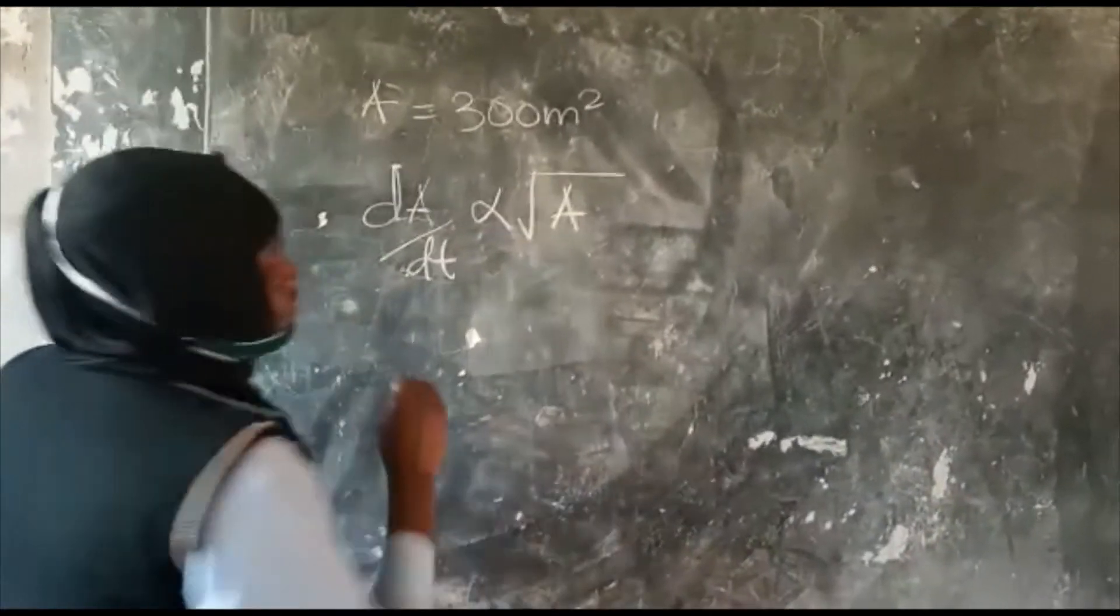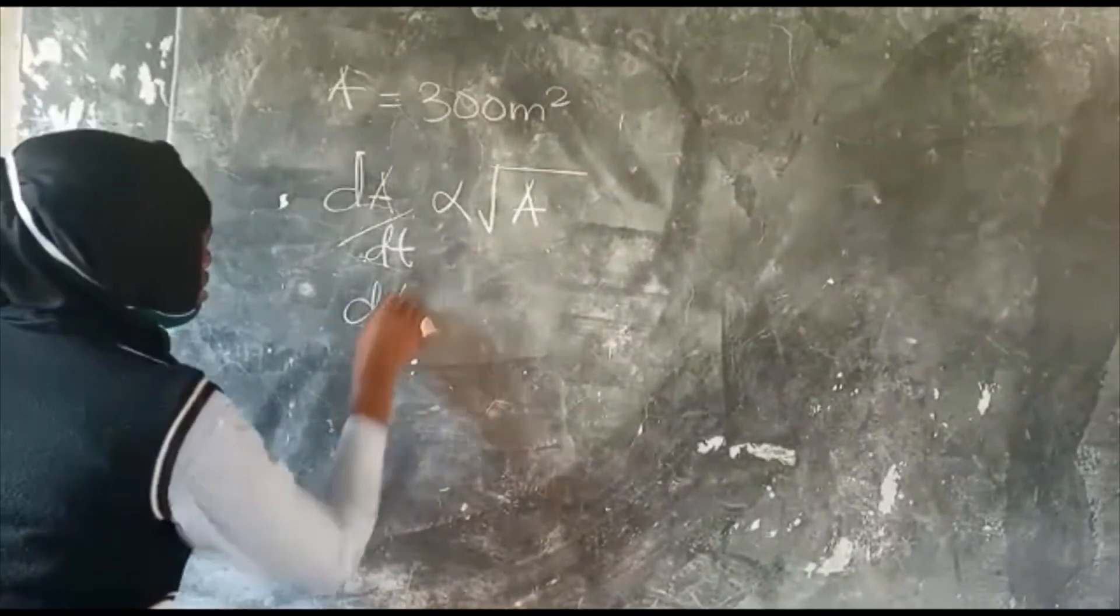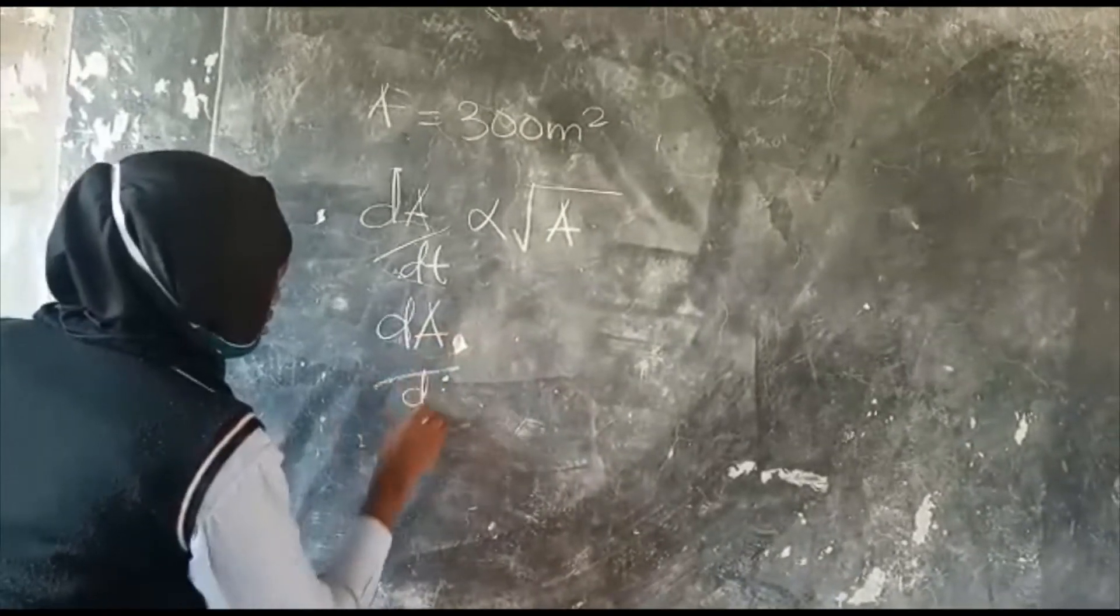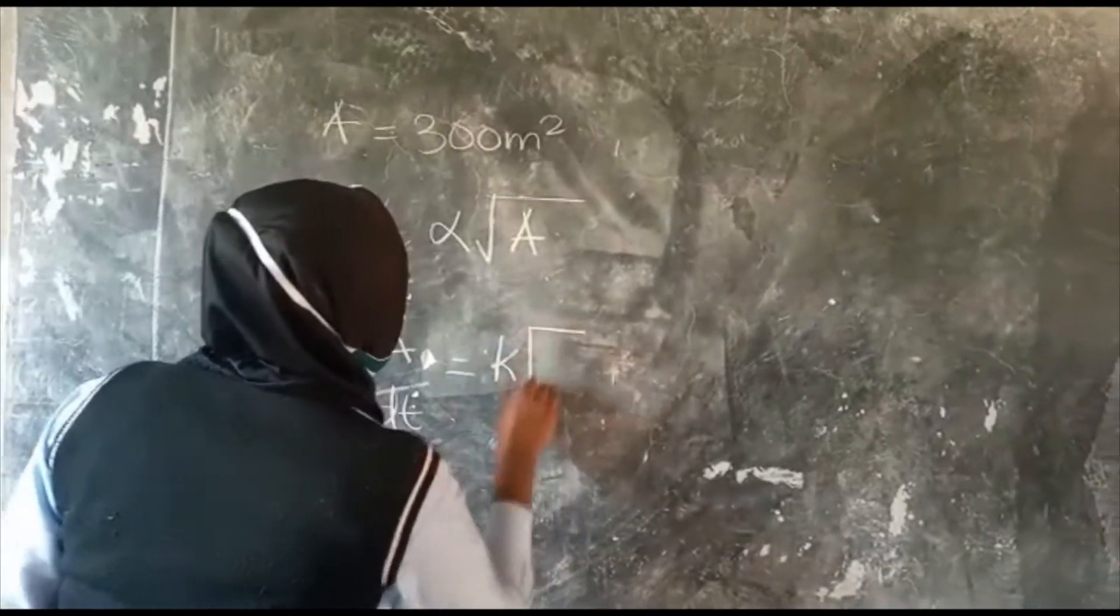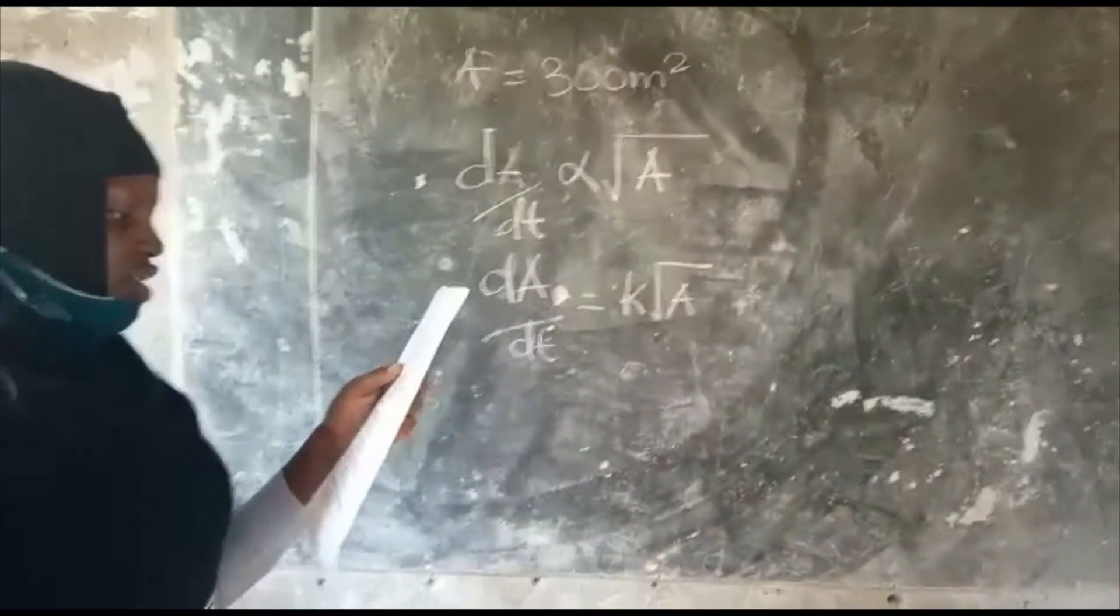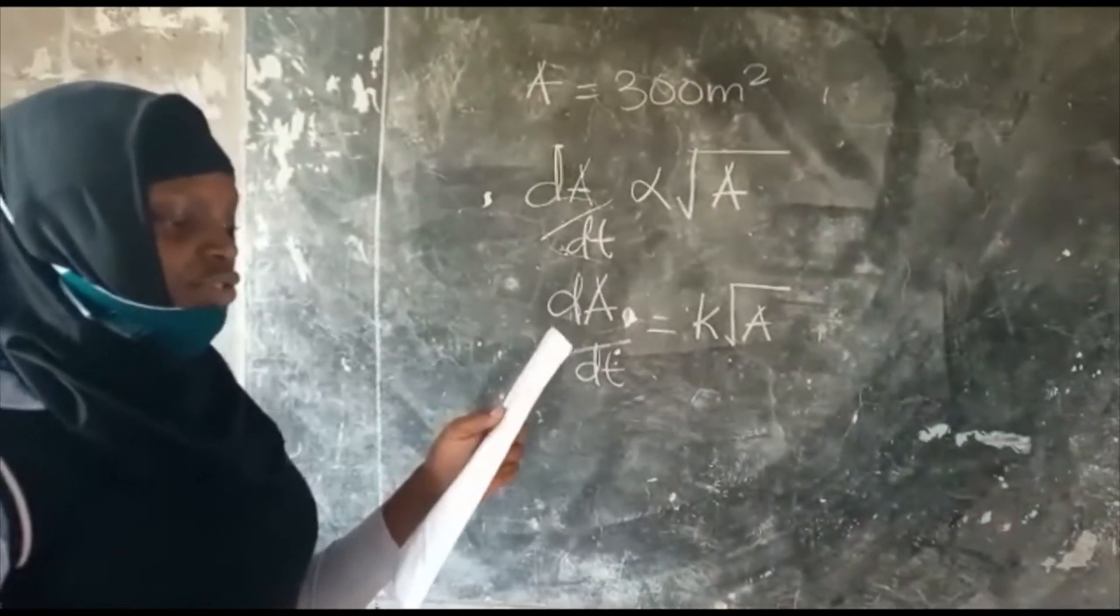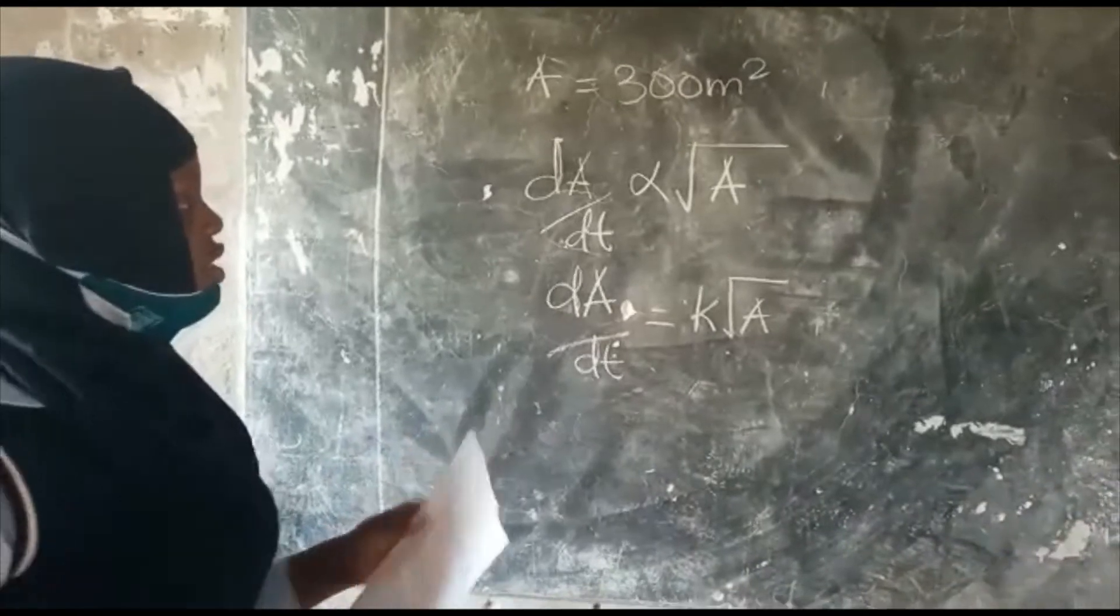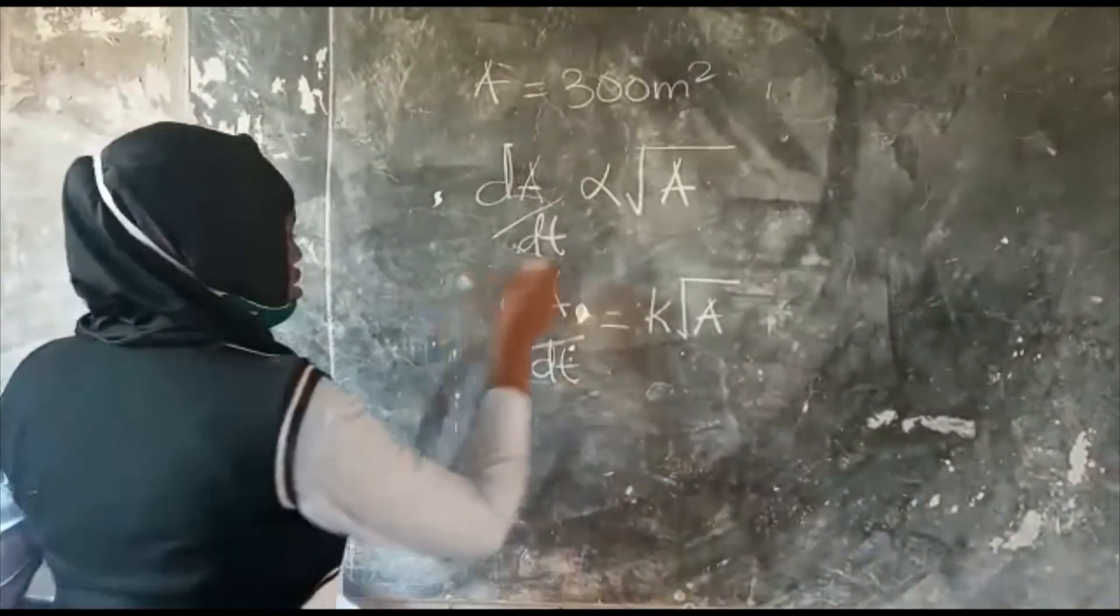So to remove the sign of proportionality, I am going to introduce the constant. The first question is to form a differential equation to show the relationship between A and T. So this is the differential equation. This is our one.